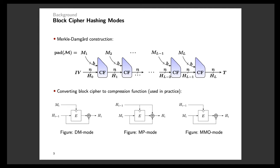However, instead of designing a new hash function from scratch, there is another choice of converting an existing block cipher to a compression function and then to a hash function using the Merkle-Damgård construction. We call this method block cipher hashing modes. This method is relatively simple and a new design will enjoy both inherited security and proper performance from the underlying block cipher.